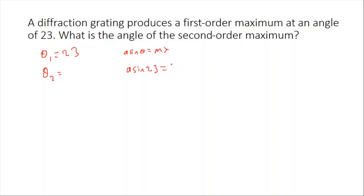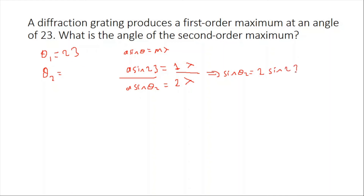For the first order maximum: a sine 23 equals one times lambda. For the second order maximum: a sine theta two equals two times lambda. Dividing these two equations, lambda and a cancel, giving sine theta two equals two times sine 23, which is approximately 2 × 0.39 = 0.78. Using a calculator, theta two is approximately 51 degrees.